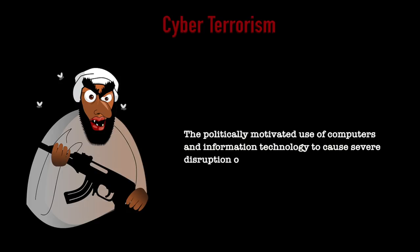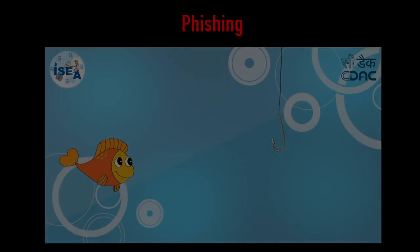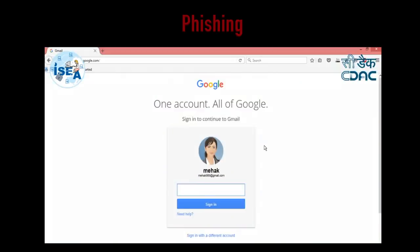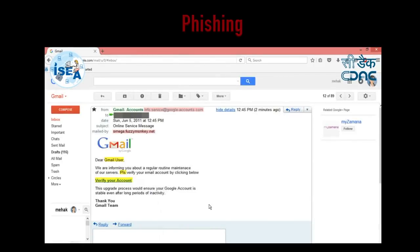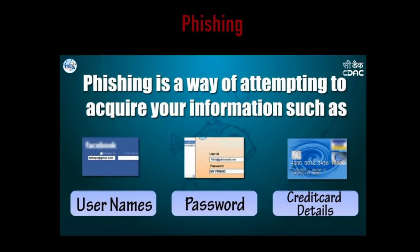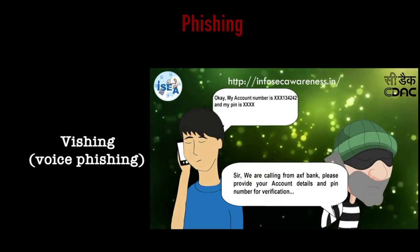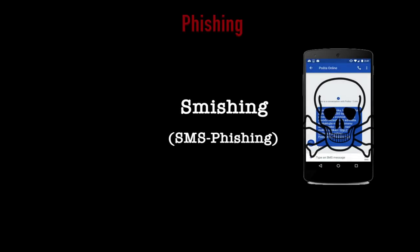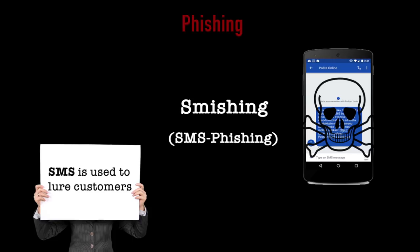Cyber terrorism is defined as the use of computer resources to intimidate government, the civilian population, or any segment thereof in furtherance of political or social objectives. Phishing is the process of acquiring personal and sensitive information of an individual via email by disguising as a trustworthy entity. The purpose is identity theft — personal information like username, password, and credit card number may be used to steal money. If a telephone is used as a medium it is known as vishing or voice phishing. Another form is smishing, in which SMS is used to lure customers.